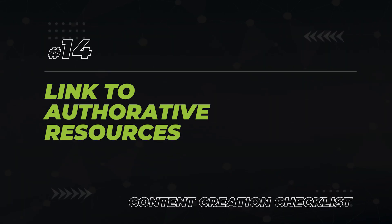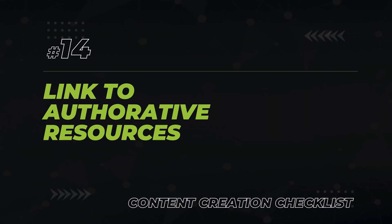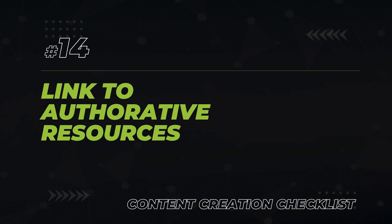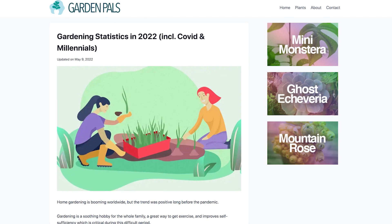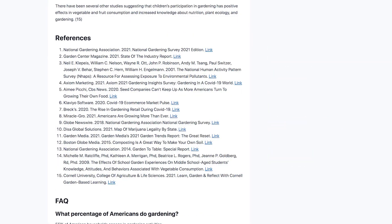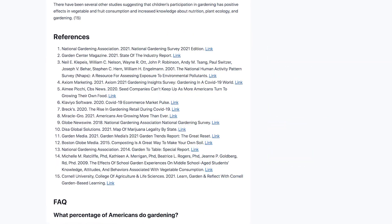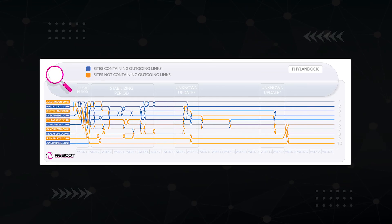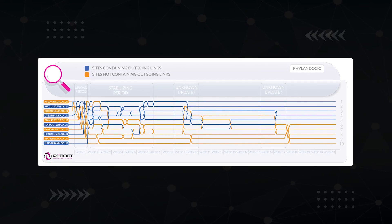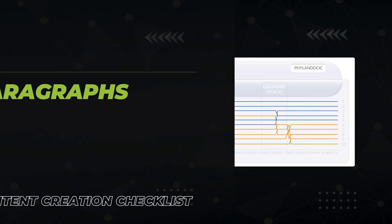Make sure you link out to authoritative resources on your topic to further enrich your content. Especially if you're referencing any facts, it's good to cite where your data came from. This isn't just a good idea for your readers — Google loves it too. In this number one article on gardening statistics, they have a references section citing where they got their research from. This experiment from Reboot showed that content with external links outperformed content without links.